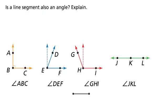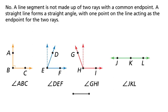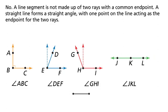Angle GHI is not a line segment. A line segment is not made up of two rays with a common endpoint. A straight line forms a straight angle with one point of the line acting as the endpoint for the two rays.